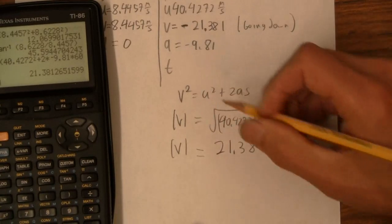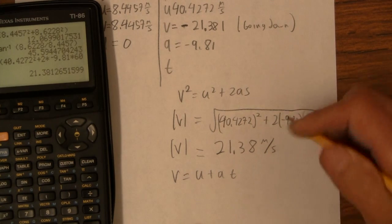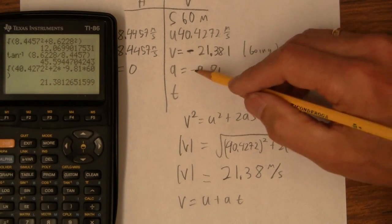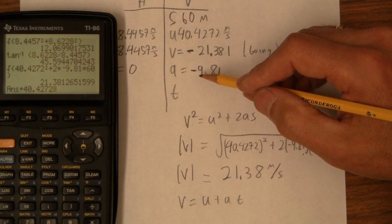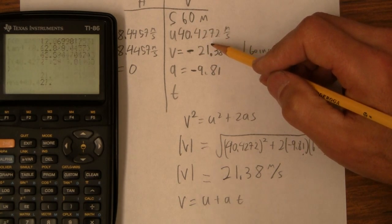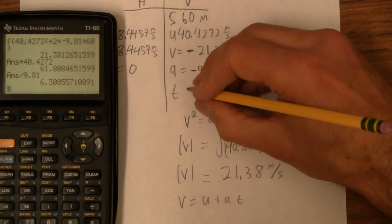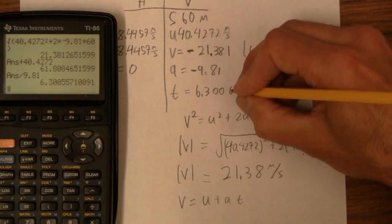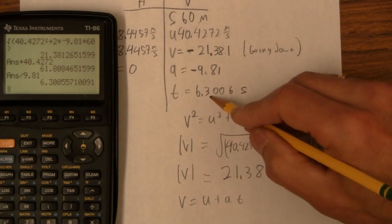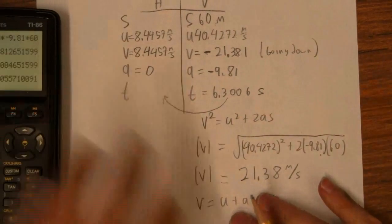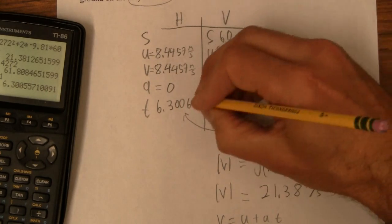Now I can solve for time. I'll use v = u + at to find the time. This is my initial velocity, that's my final velocity, and that's my acceleration. I get that it takes 6.3006 seconds to get to that point. And now I can carry that time value across to the horizontal side — 6.3006 seconds.